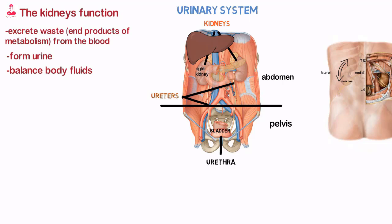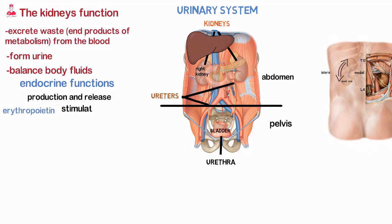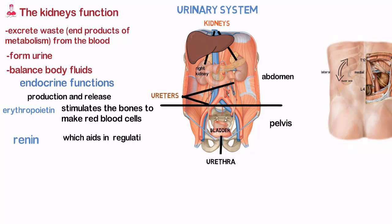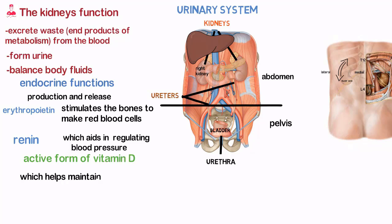The kidneys also have endocrine functions that include production and release of erythropoietin and renin, which stimulates the bones to make red blood cells. Renin aids in regulating blood pressure. And the active form of vitamin D, which helps maintain calcium absorption and mineral metabolism.